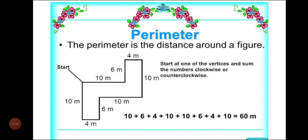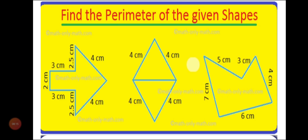As you can see in this picture, the perimeter is the distance around a figure. All the sides of this figure are given to you. By adding all these sides, we get the perimeter of this shape as 60 meters.